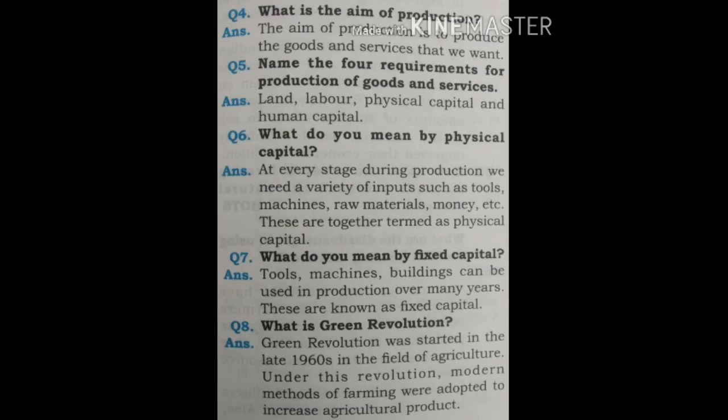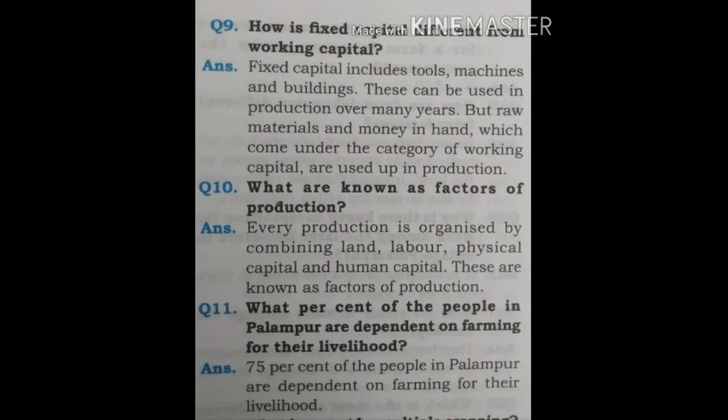Question 7: What do you mean by fixed capital? Tools, machines and buildings can be used in production over many years. These are known as fixed capital. Question 8: What is the Green Revolution? The Green Revolution was started in the late 1960s in the field of agriculture. Under this revolution, modern methods of farming were adopted to increase agricultural production.